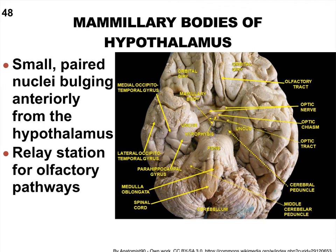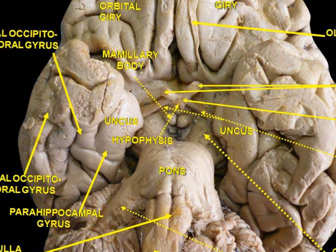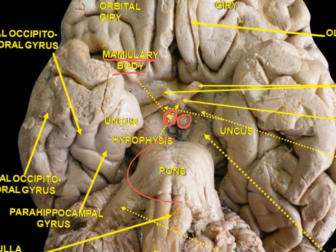Looking at an inferior view of the brain, these little nipple-like structures visible on the brain are your mammillary bodies — 'mammillary' referring to little breasts or nipples. They show up very prominently on the brain. This bumpy portion of the brain stem indicates the anterior side of the brain.